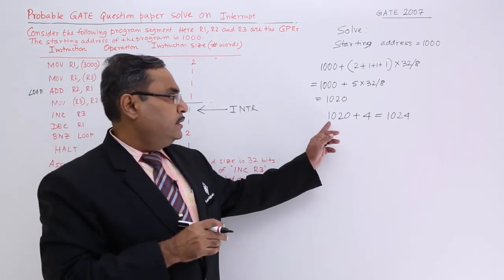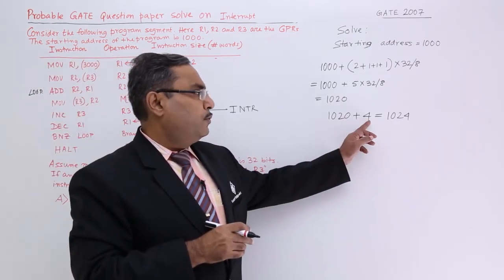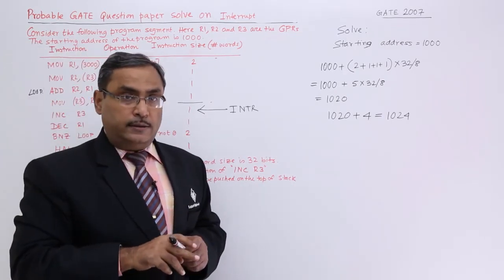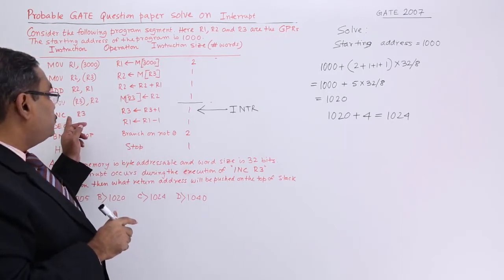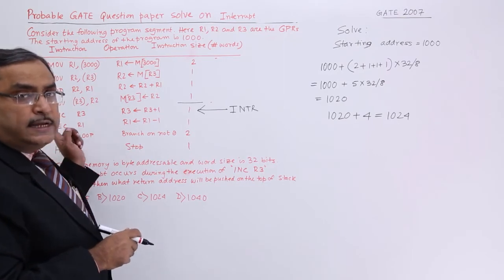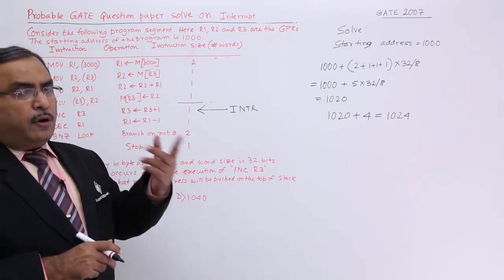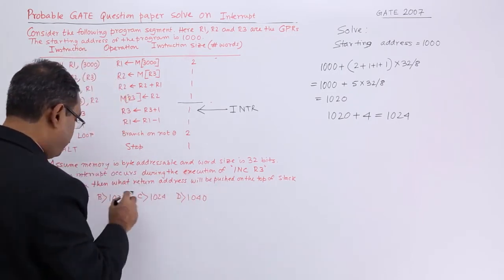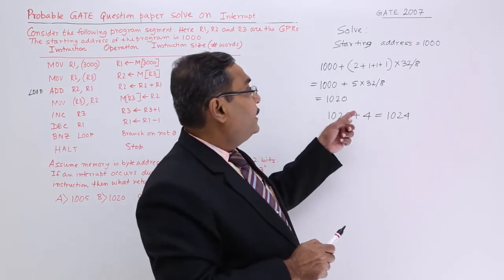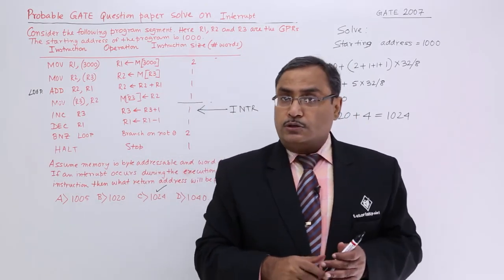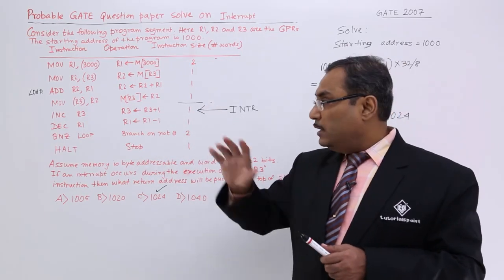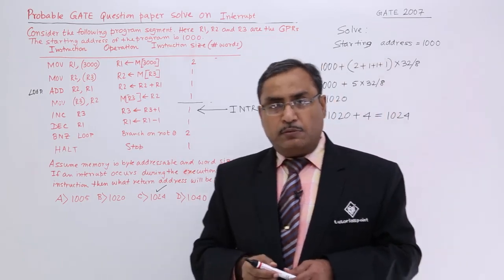I think you got my answer so 1020 plus 4 will be the address of the next instruction and that will be pushed on the top of the stack. Because this instruction is supposed to get executed should get finished then the next instructions address will be pushed on the top of the stack and from there the execution will be resumed. C is the answer with 1024 so in this way I have done the calculation. This sort of interrupt related problems might be coming in the gate and you should have to tackle the problem accordingly. I have given the explanation and all thanks for watching this particular video.